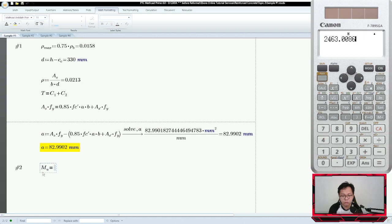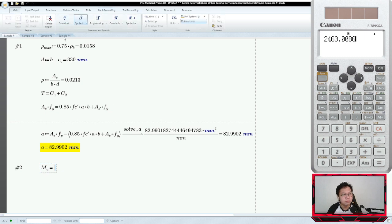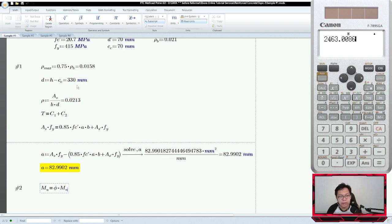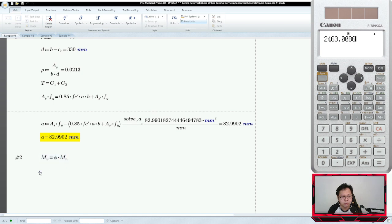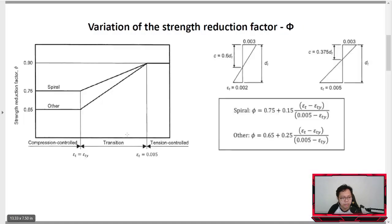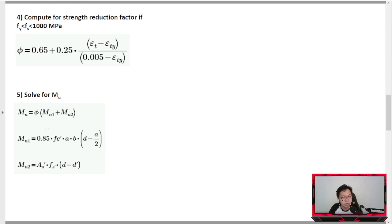What are we looking for? We want to solve for MU. MU is just phi times MN. What is MN? Total MN is MN1 plus MN2. Let's check what MN1 is. MN1 equals 0.85 Fc prime AB times D minus A over 2, while MN2 is AS prime FS prime times D minus D prime.